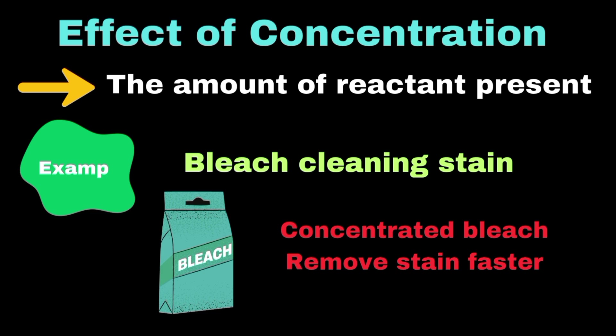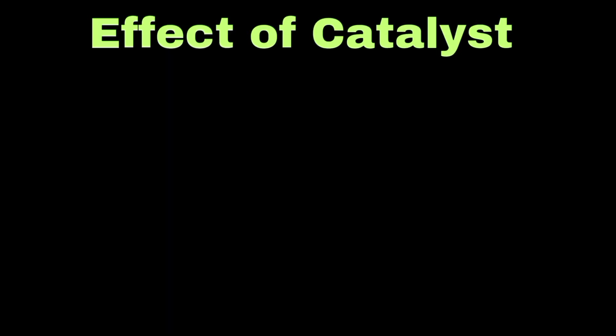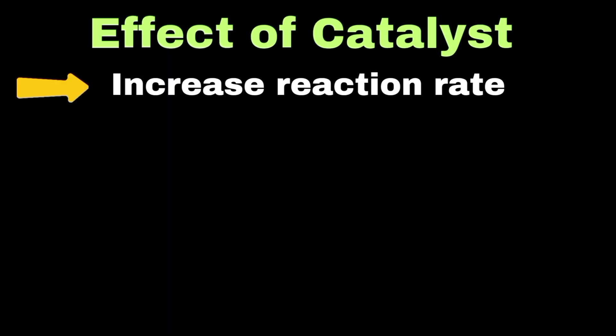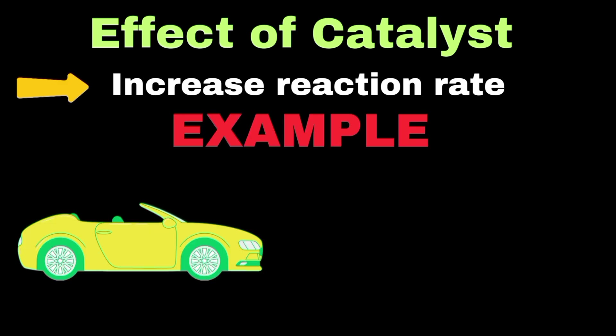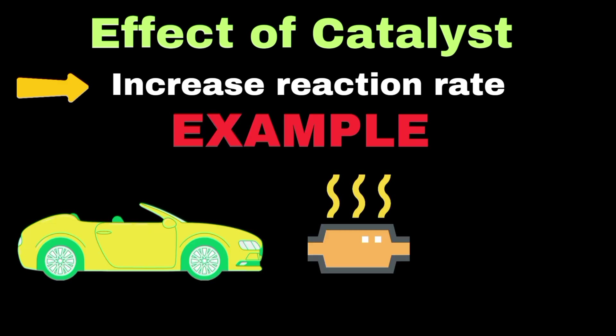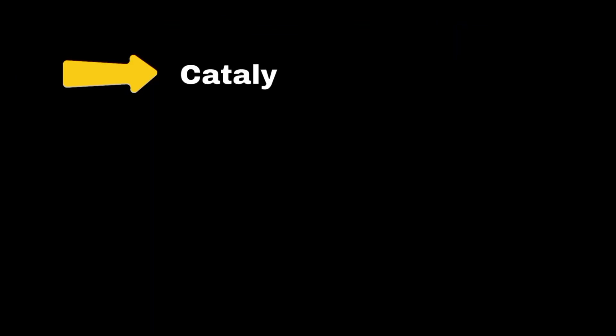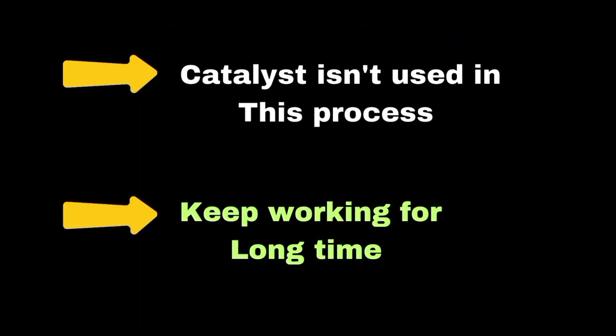Moving to catalyst effects, a catalyst can be defined as a substance that increases reaction rates without being consumed in the reaction. Let's understand this with the example of the catalytic converter in cars. This device contains platinum and other metals that help break down harmful exhaust gases into less harmful substances much faster than would happen without the catalyst. Interestingly, the catalyst isn't used up in this process, so it can continue working for a long time.